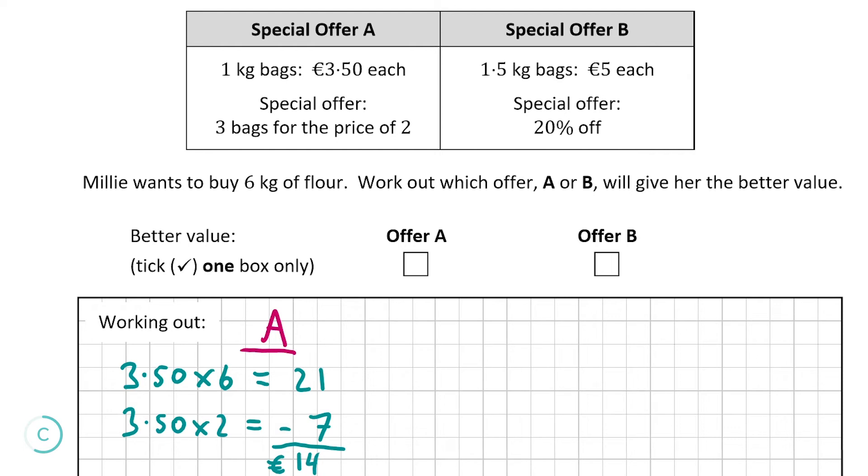Now let's have a look at special offer B. This time the bags are 1.5 kg. She'll have to buy four bags to get the 6 kg. So it'll be €5 by 4, which is €20. Now it's 20% off. We're going to get 20% of €20, which is €4. We're going to minus this €4 from €20 to give us the amount it'll cost her to buy the 6 kg of flour with offer B. So €20 minus €4 is €16. It's going to cost her €16 with offer B and only €14 with offer A. Therefore we're going to pick offer A.